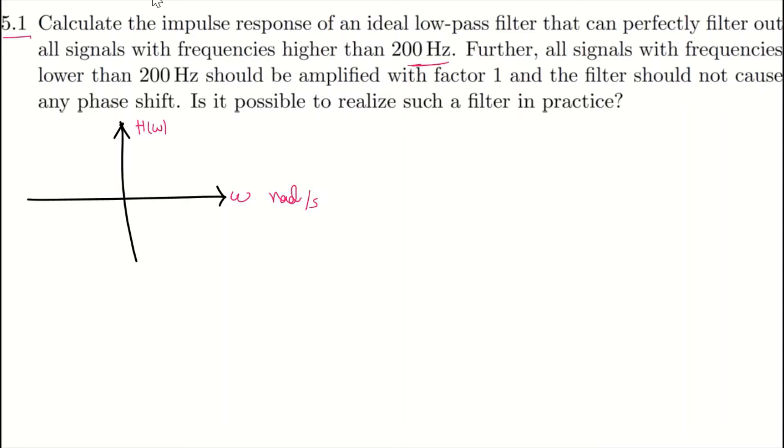First, we want a filter to filter out all frequencies higher than 200 Hz. Since it's symmetric, that means we want a filter that filters out all frequencies also below minus 200 Hz. So the cutoff frequency in Hz is 200 Hz. And we know how to convert that to angular frequency.